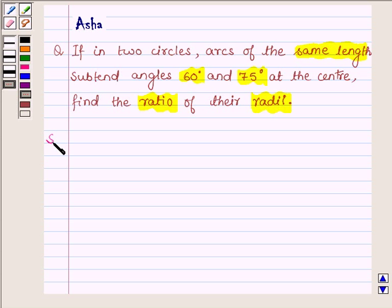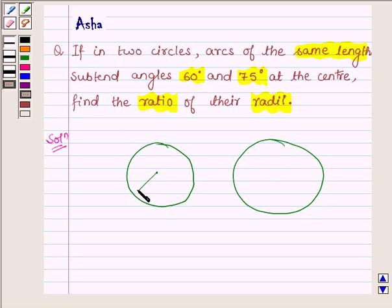So let us proceed on with the solution. And here we are given two circles. And in both of these circles, we have two arcs which are of same length and one subtends angle of 60 degrees at the center and another arc subtends angle of 75 degrees at the center.